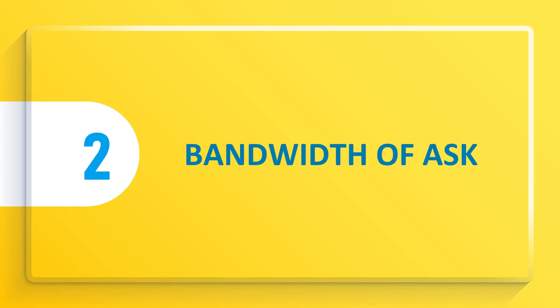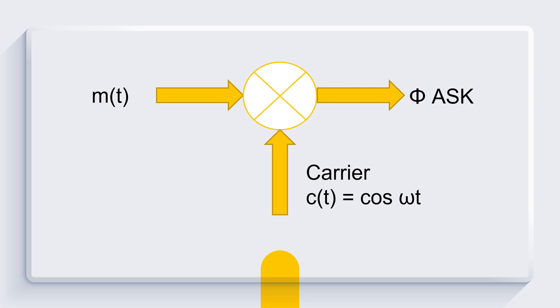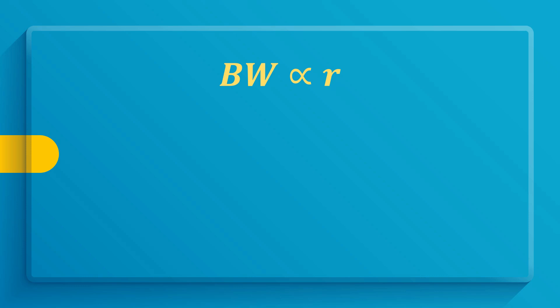For the second part, it is bandwidth of amplitude shift keying. We already discussed how to get ASK output. It is the product of m(t) and c(t), which equals m(t) cosine ωt. So the bandwidth of ASK signal is directly proportional to the baud rate of the message signal.